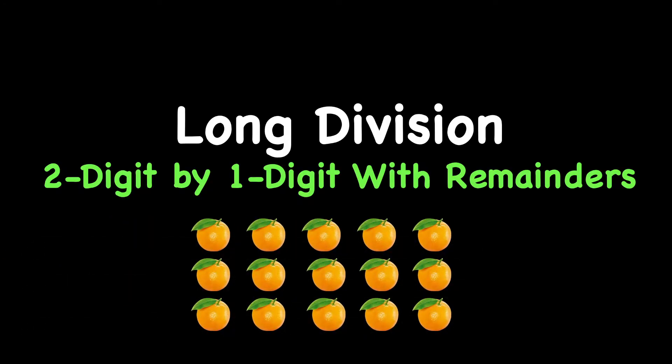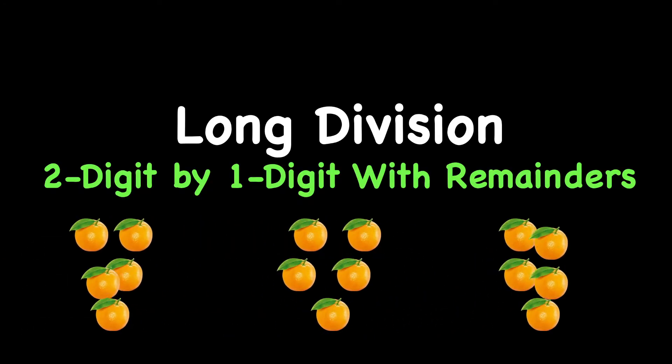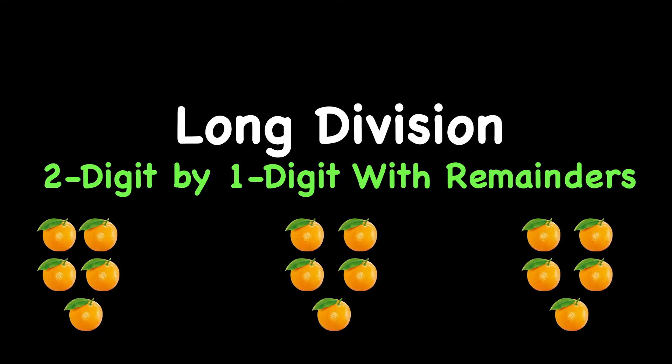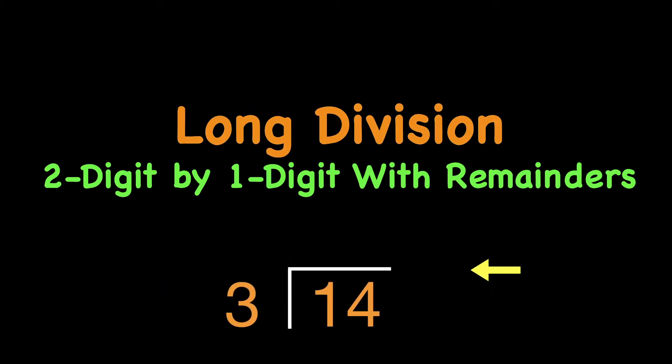Division is when you start with a greater number and you want to break that into equal smaller groups, in this case three smaller groups. Long division is when we use the long division brackets or box that helps you organize and show your work. Two-digit by one-digit means that we're dividing two-digit numbers by one-digit numbers. Remainders means that sometimes you have numbers left over.